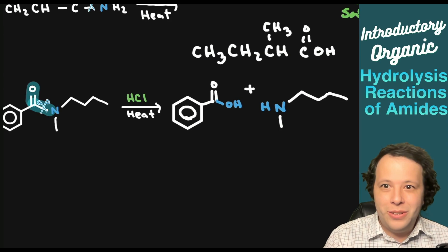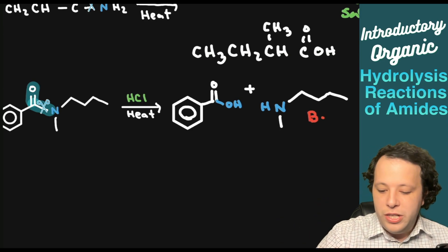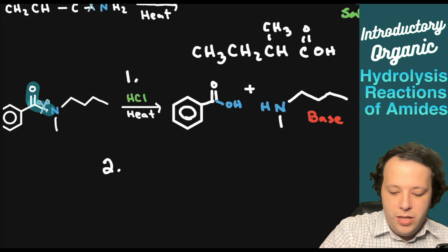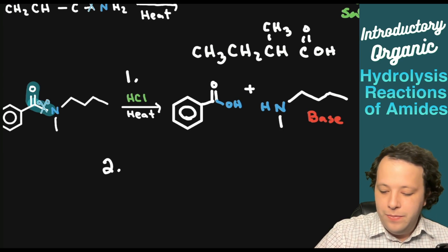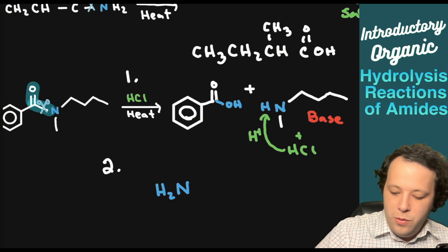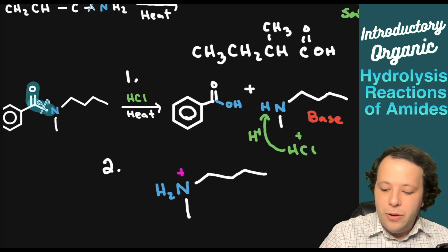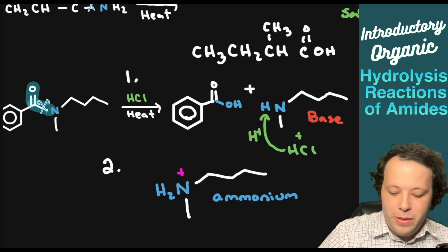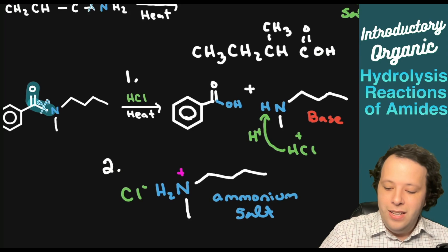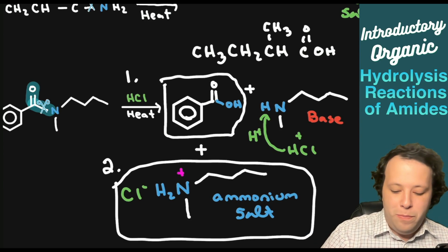The other part is the amine chain: H, N, then the methyl and butyl portions of the amine. Being that we're adding HCl, we have to neutralize a part. HCl is an acid so it's going to react with the base — our amine. In step two the amine reacts with HCl: hydrogen is donated to that amine, giving us H2N with a plus sign, keeping all the carbons the same. The functional group goes from an amine to an ammonium, making an ammonium salt, along with the carboxylic acid.